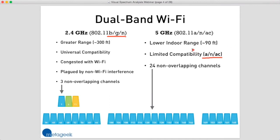This is getting better. Pretty much every Apple device starting with the iPhone 5 has a dual-band radio on board. Even my old 2009 Mac Mini supports 802.11a/b/g/n. So dual-band support is getting better and better over time.